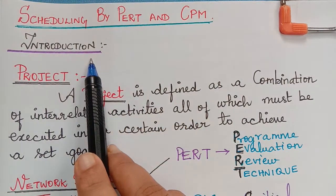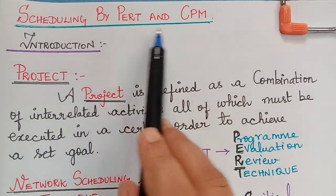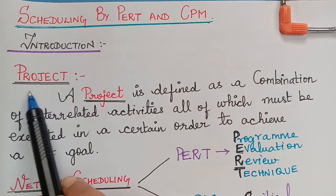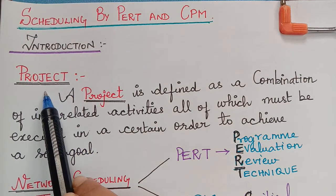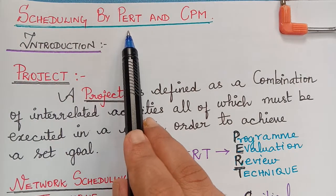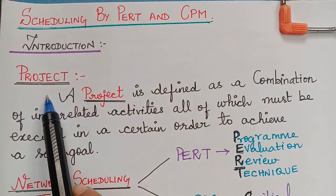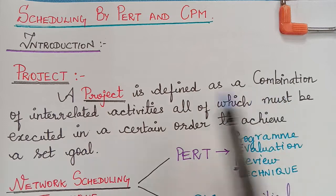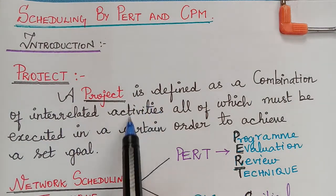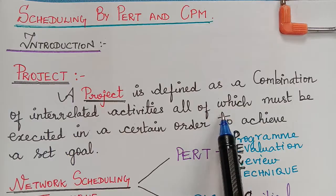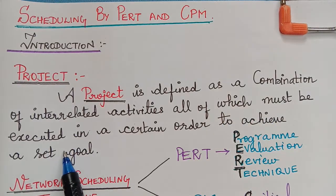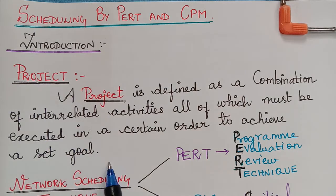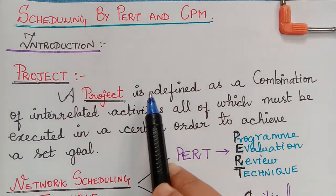Introduction: To learn about PERT and CPM, first of all we should know the definition of a project, because for a project we have to evaluate PERT and CPM. A project is defined as a combination of interrelated activities, all of which must be executed in a certain order to achieve a set goal.